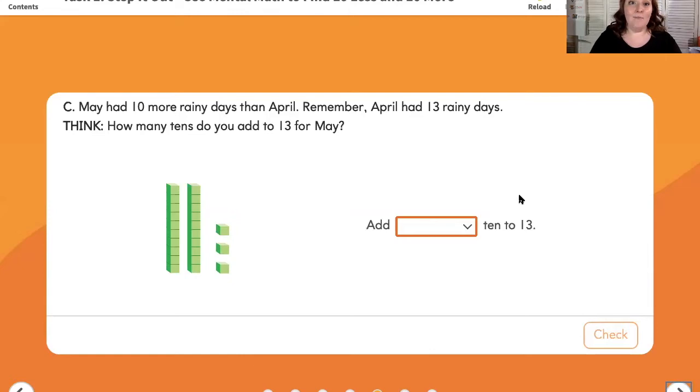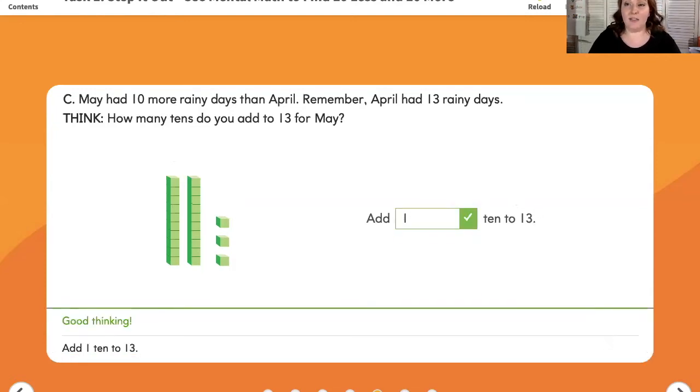Letter C. May had 10 more rainy days than April. Remember, April had 13 rainy days. Think. How many 10s do you add to 13 for May? So we started off with one group of 10 and 3 to give us 13. I'm going to add one more group of 10, which gives me 10, 20, 3. So we're going to add one group of 10 to give us 23. Add one 10 to 13.